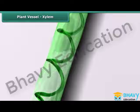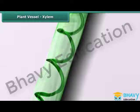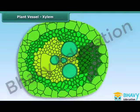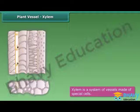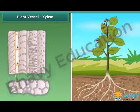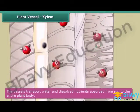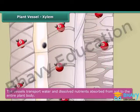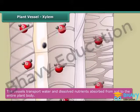A network of tube-like vessels runs through the entire body of a plant. This system of vessels is known as xylem. These vessels are made of special cells that act as channels connecting the roots to the leaves through the stem and the branches. Xylem transports water and dissolved nutrients absorbed from the soil to the different parts of the plant through this network of vessels.